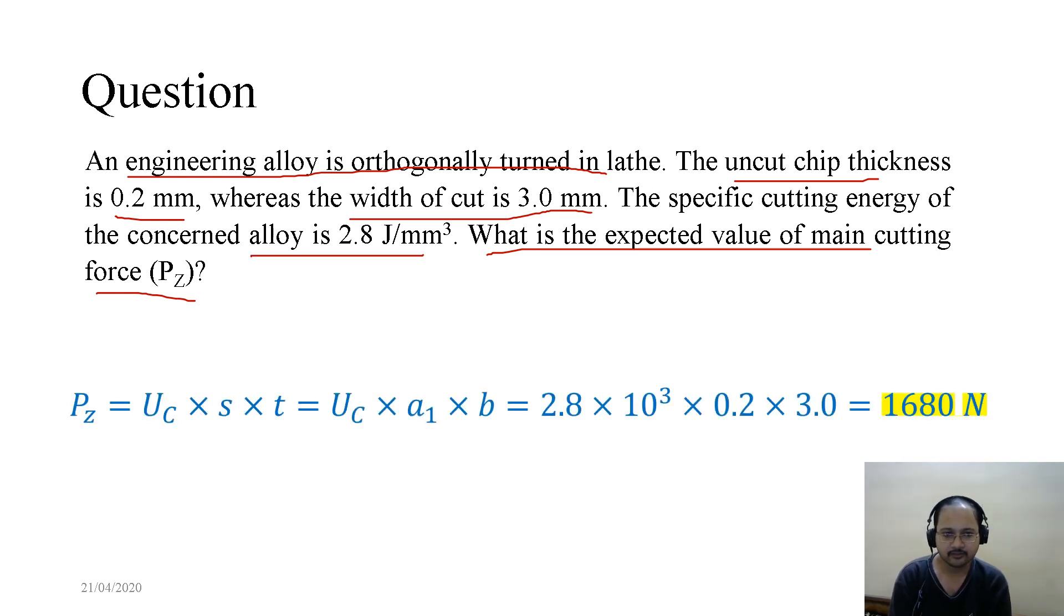We can write Pz equals specific cutting energy times s times t, that is specific cutting energy times a₁ times b. Now we have the value of specific cutting energy as 2.8. So we write 2.8 times 10³ times a₁ times b, which is 2.8 times 10³ times 0.2 times 3.0.